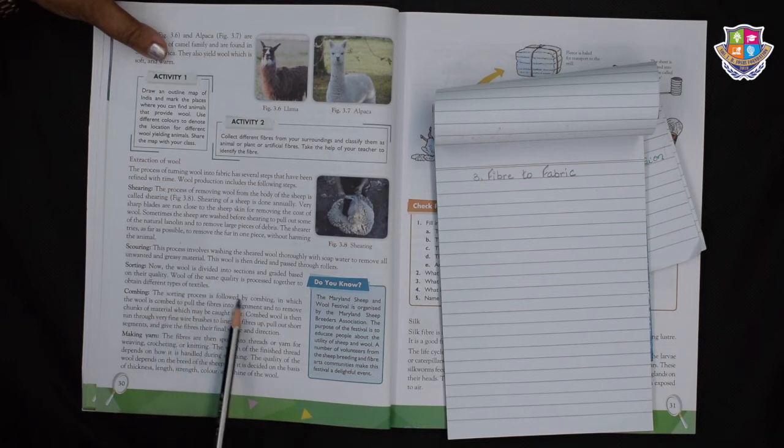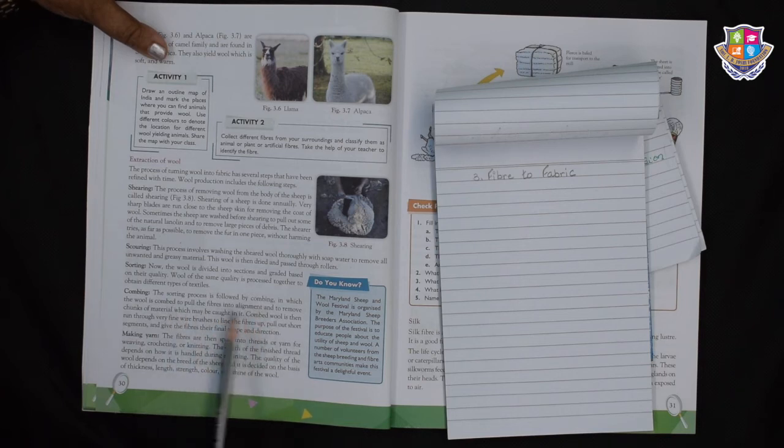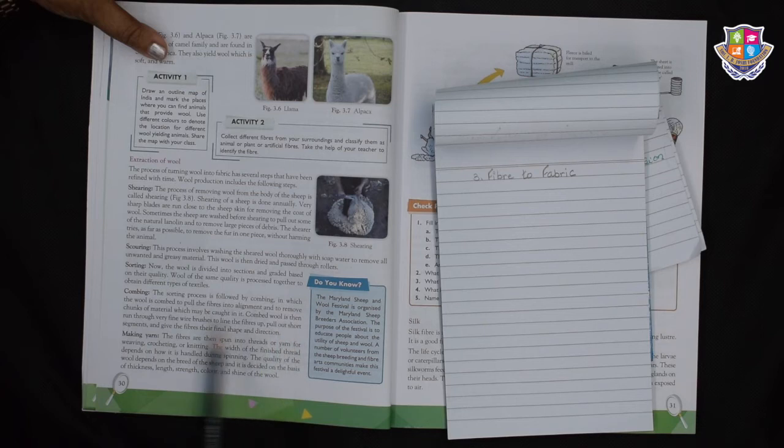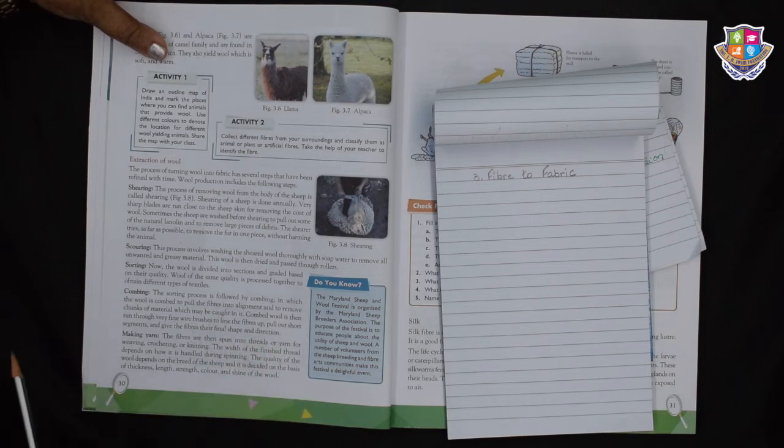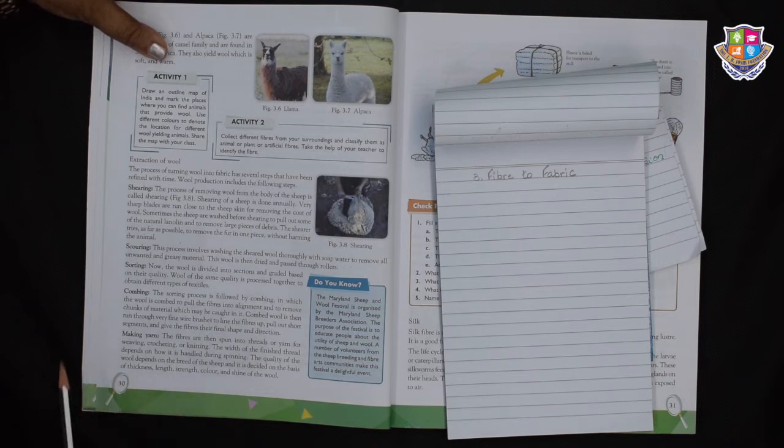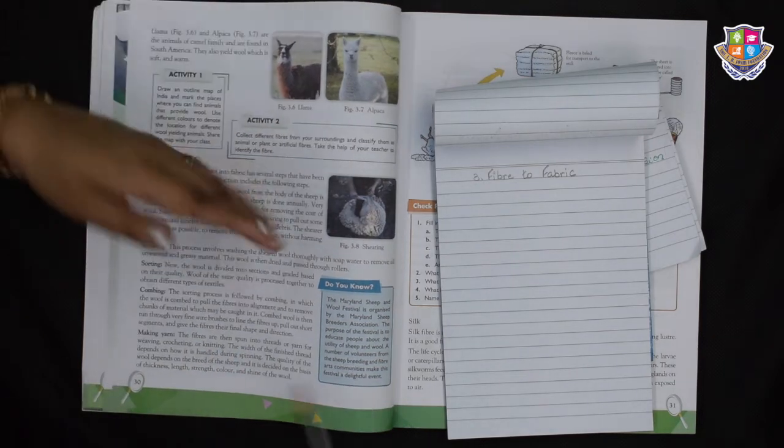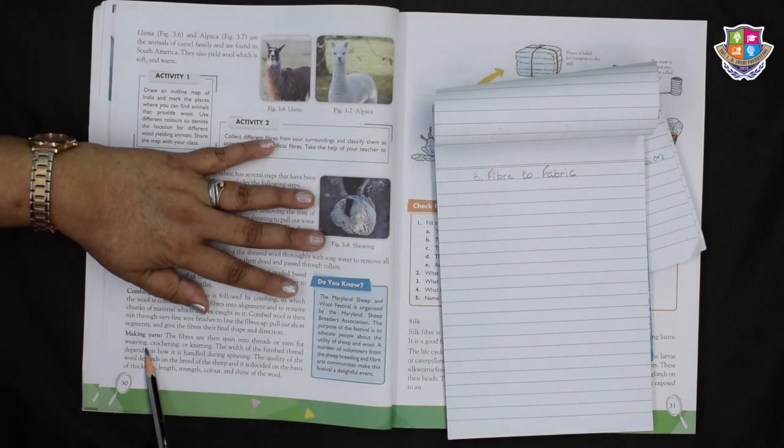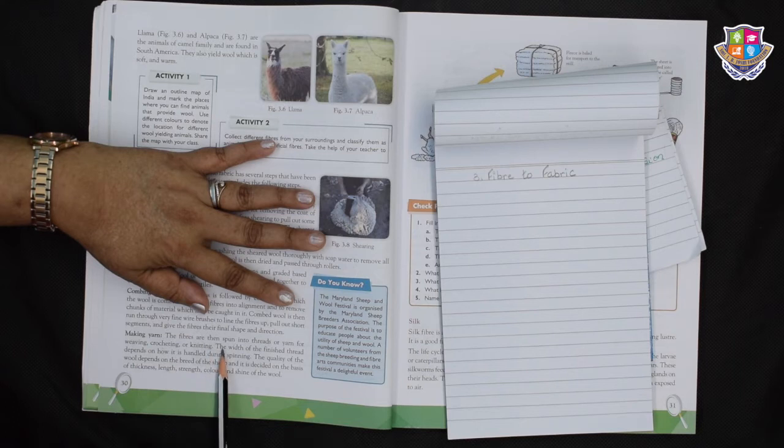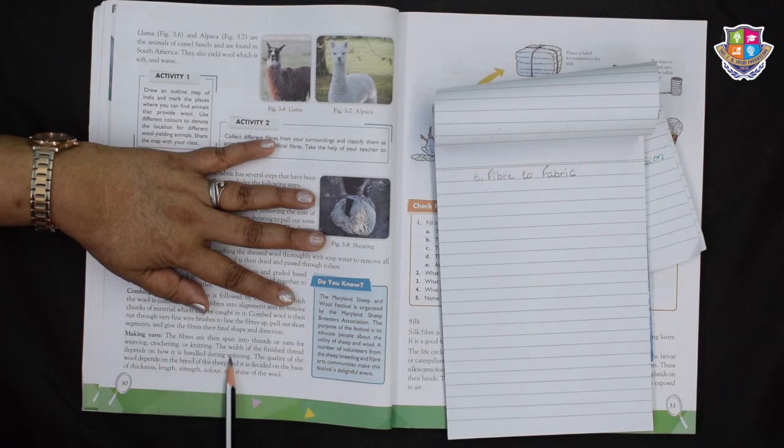Combing. The sorting process is followed by combing in which the wool is combed to pull the fibers into alignment and to remove chunks of material which may be caught in it. Combed wool is then run through very fine wire brushes to line the fibers up, pull out short segments and give the fibers their final shape and direction. Making yarn. The fibers are then spun into threads or yarn for weaving, crocheting or knitting.